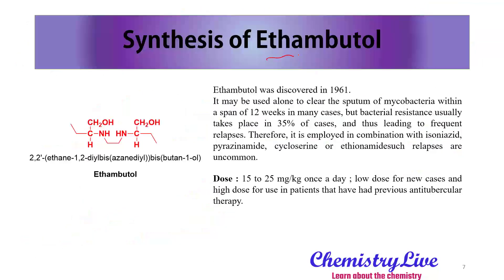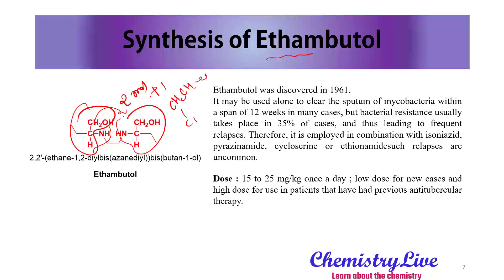Now we look at the synthesis of ethambutol. Ethambutol consists of 2 moles of the amino-butanol group combined with 1 mole of 1,2-dichloroethane. It was discovered in 1961 and used as a sole spectrum drug for mycobacteria within a span of 12 weeks in many cases, but bacteriostatic resistance occurs in about 35% of cases, leading to relapses. Therefore it is employed in combination with isoniazide, pyrazinamide, and cycloserine. The dose is 15 to 25 mg per kg once daily — lower doses for new cases and higher doses for patients currently or previously on anti-tuberculosis therapy.